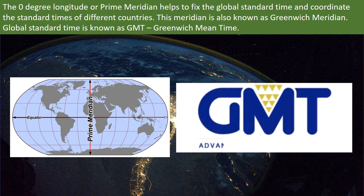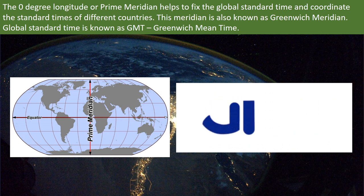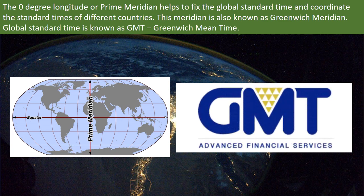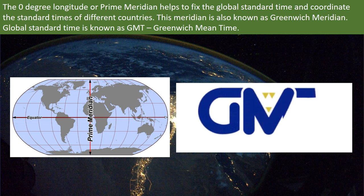Greenwich mean time, i.e. GMT, is the time measured on the Earth's zero degree line of longitude. It is used to avoid the confusion of the local time.